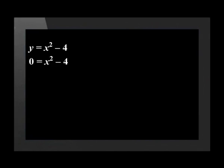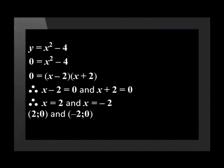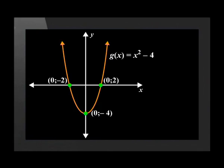To find the x-intercepts of the parabola, we set y equal to 0, just as we did with the linear function. x squared minus 4 can be factorized to (x minus 2)(x plus 2). Making each bracket equal to 0 and solving for x gives x equals 2 and x equals negative 2. This means the x-intercepts are (2, 0) and (negative 2, 0). The points (negative 2, 0), (0, negative 4), and (2, 0) are plotted and the curved quadratic function is drawn through the points.